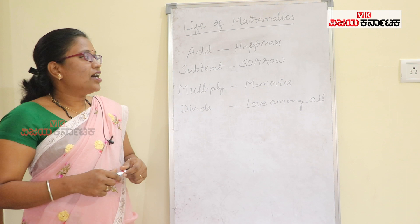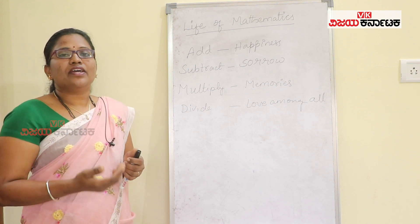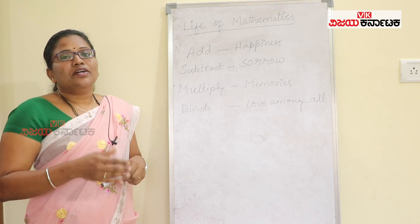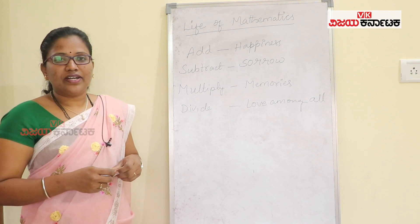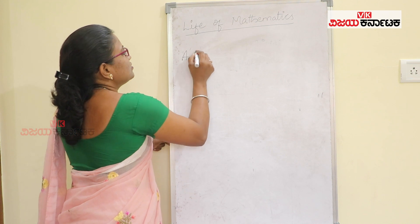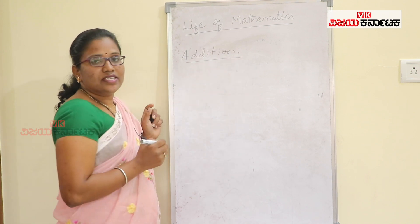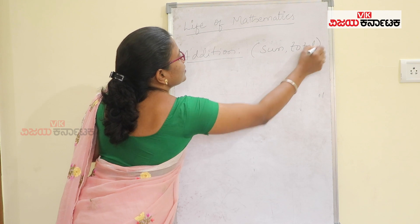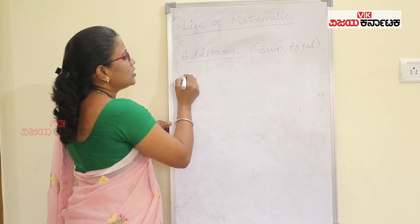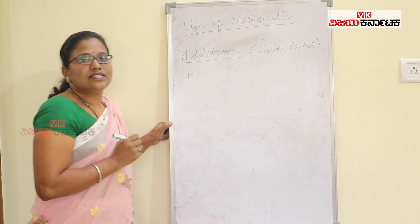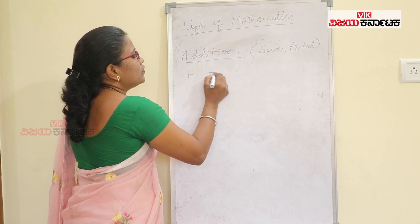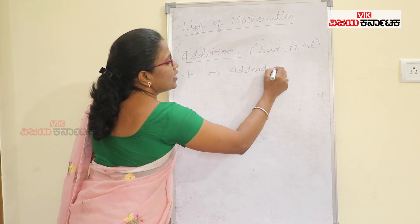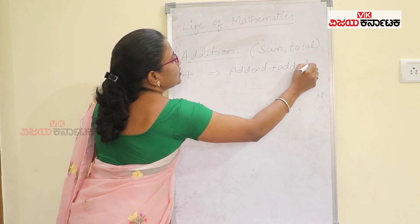These mathematical operations — addition, subtraction, multiplication — let's look at addition. The symbol is plus. The rule is: when you add two numbers, each number is called an addend. So, addend plus addend gives you the sum.